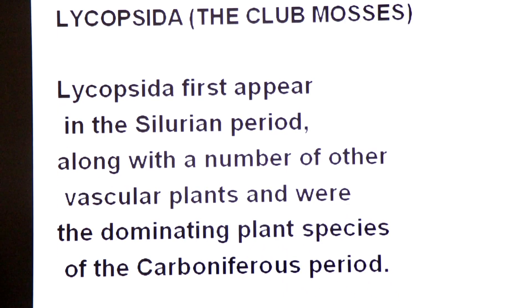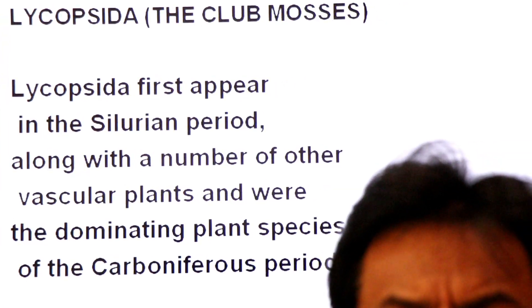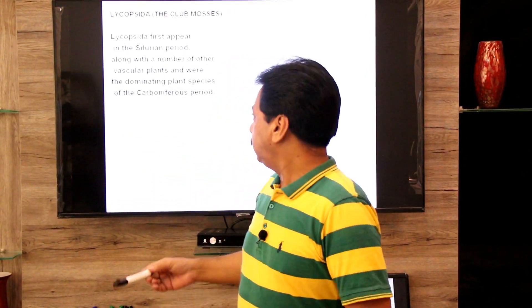Lycopsida appeared in the Silurian period and were the dominating plant species of the Carboniferous period. Now we come to their name — why they are called club mosses.